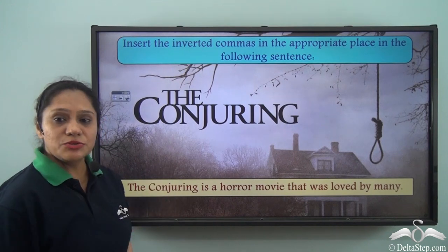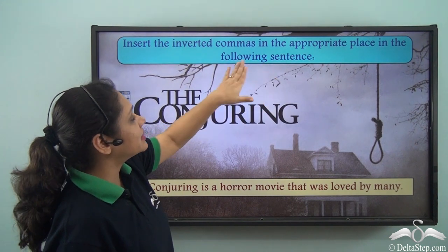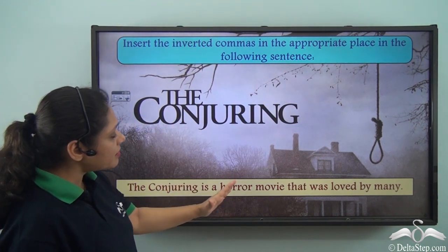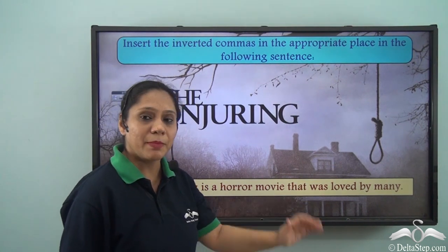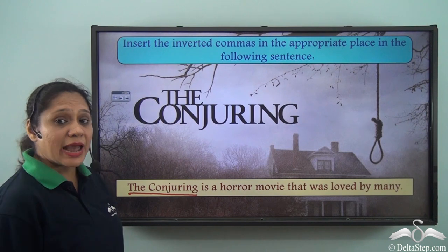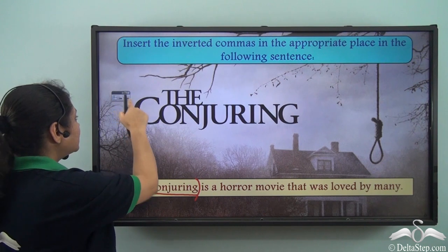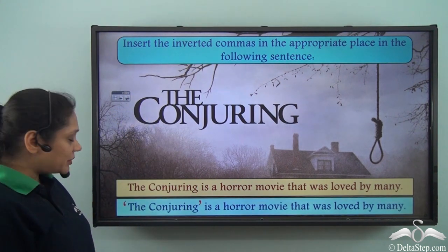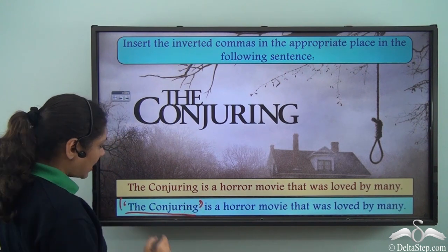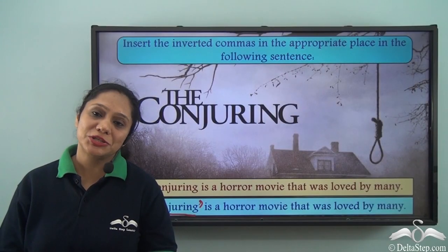Now let us do this exercise. Insert the inverted commas in the appropriate place: 'The Conjuring is a horror movie that was loved by many.' The Conjuring is the name of a movie, hence this part has to be included within the inverted commas. So the sentence should be written as: 'The Conjuring' is a horror movie that was loved by many.